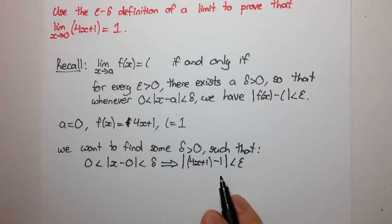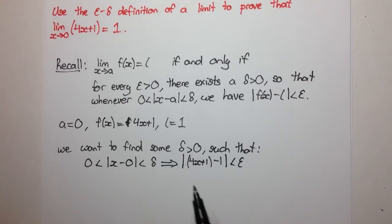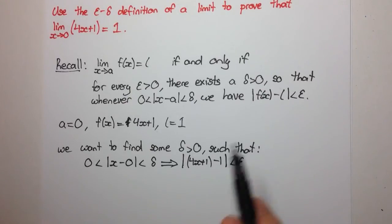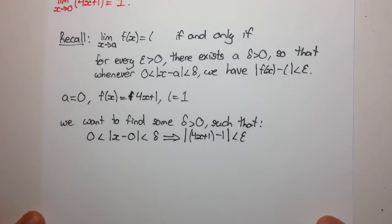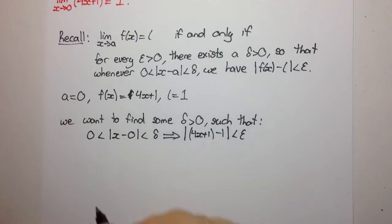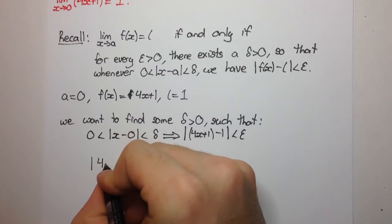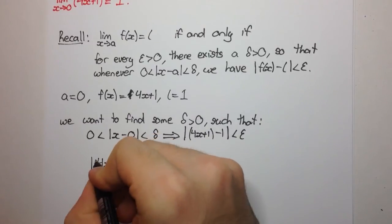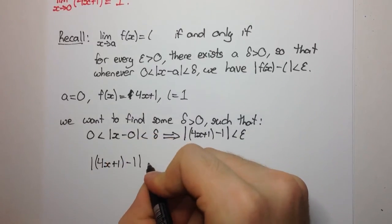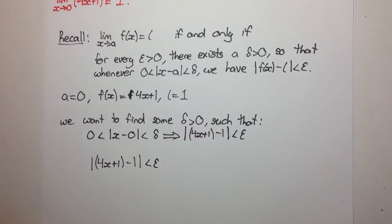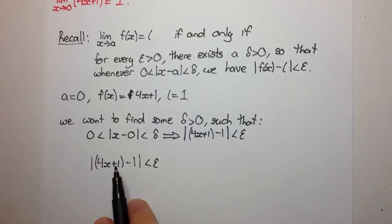Alright so the trick with these types of questions is to start here and work backwards and then we can see the steps that we need to solve the problem. So let's start off with what we want, we want to eventually end up with something implying this.